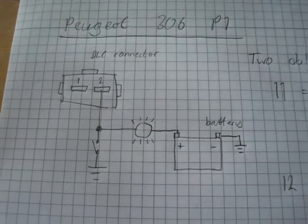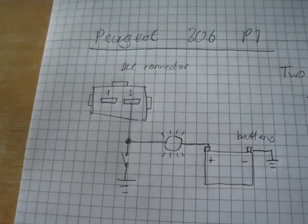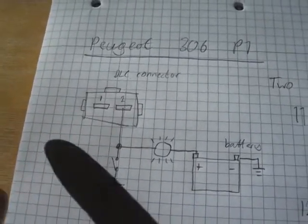I will be doing this fault code reading in two methods. Firstly, I will be using a Hanes PFC-R reader, and secondly I will be using an LED test lamp and some wires to short between different connections.